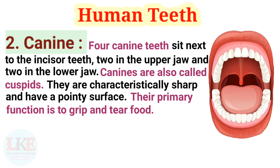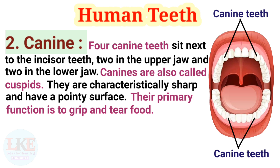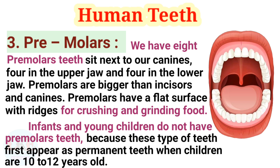Second, canines. 4 canine teeth sit next to the incisor teeth — 2 in the upper jaw and 2 in the lower jaw. Canines are also called cuspids. They are characteristically sharp and have a pointy surface. Their primary function is to grip and tear food.